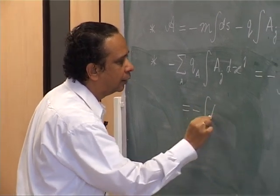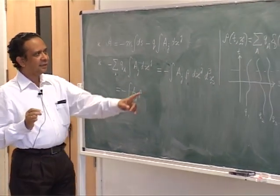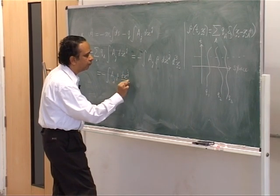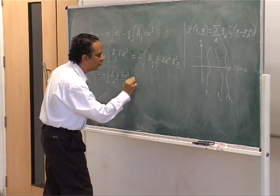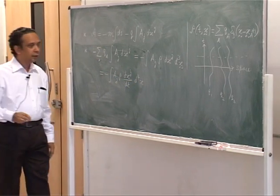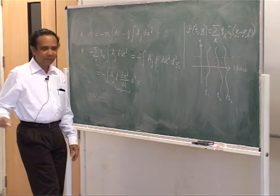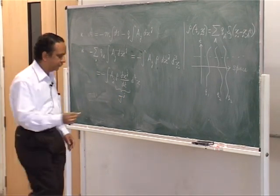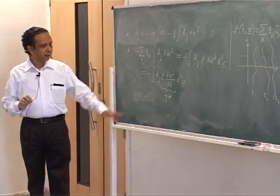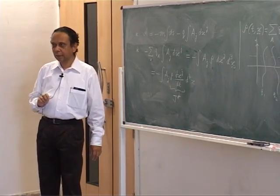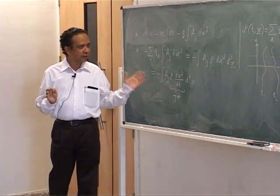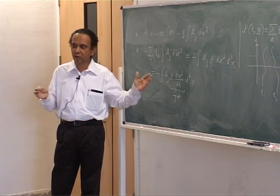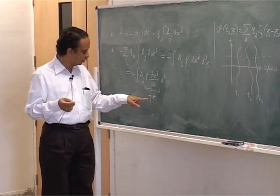This can now be written as −∫ A_j ρ (dx^j/dt) d³x. Multiplying and dividing by dt, this becomes an integral over d⁴x. The quantity ρ(dx^a/dt) I will call J^i, the current four-vector. How do I know it is a four-vector? The whole action is a scalar, d⁴x is a scalar, so this combination must also be a scalar — meaning A_j J^j is a scalar, and since A_j is a four-vector, J^j must be a four-vector.